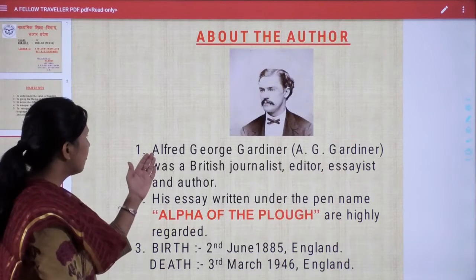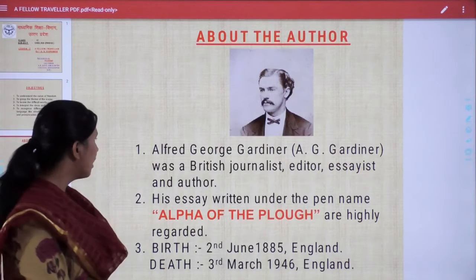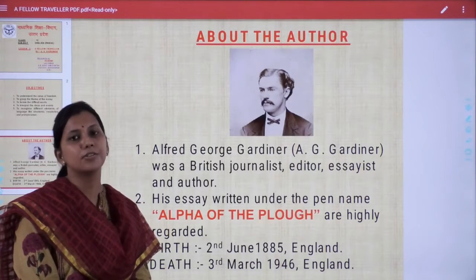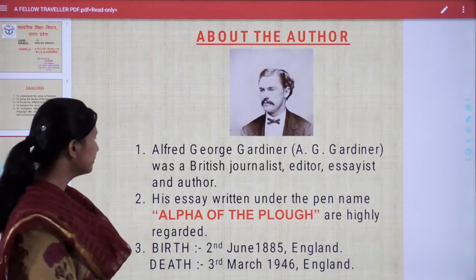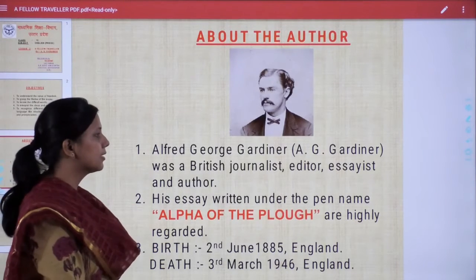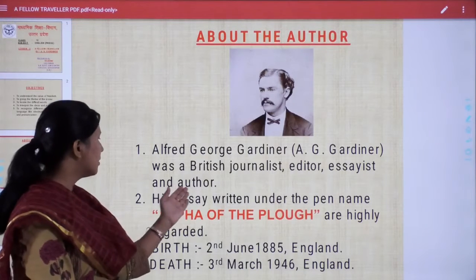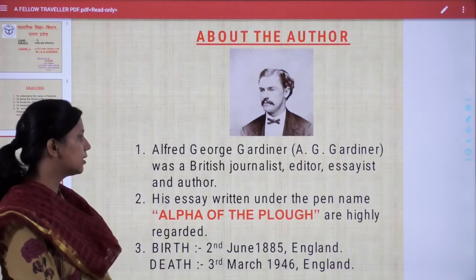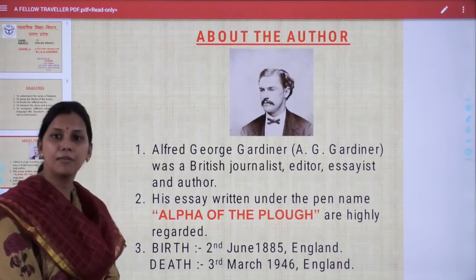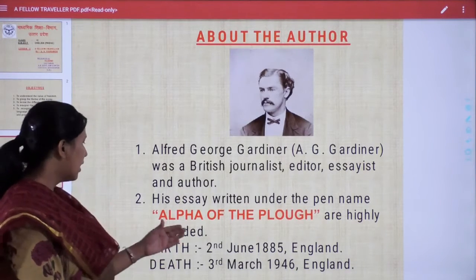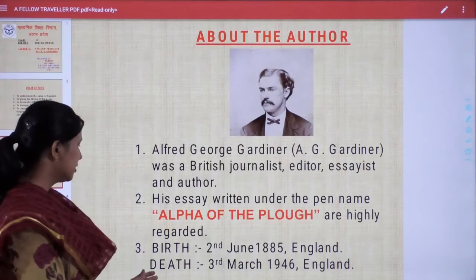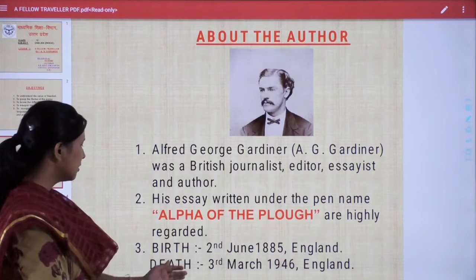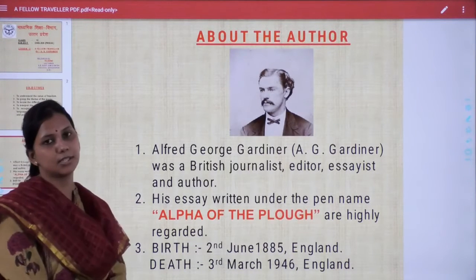The full name of A.G. Gardiner was Alfred George Gardiner, and he was a British journalist, editor, essayist, and author. His essays written under the pen name 'Alpha of the Plough' are highly regarded. He was born on the 2nd of June, 1865, in England, and died on the 3rd of March, 1946, in England.